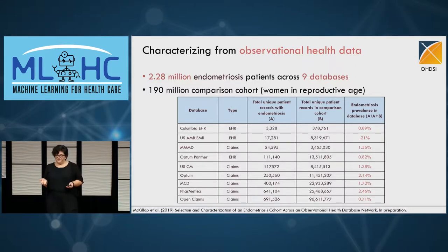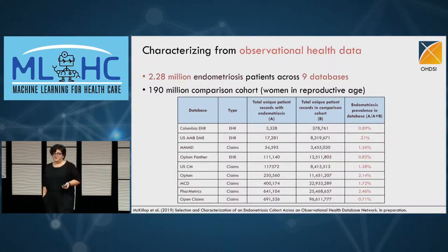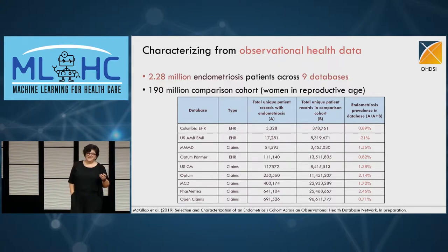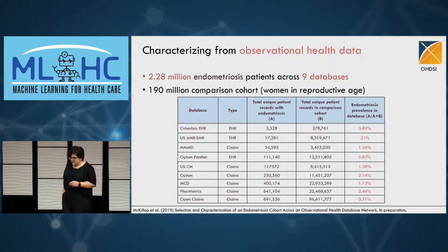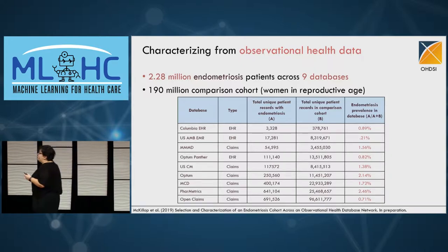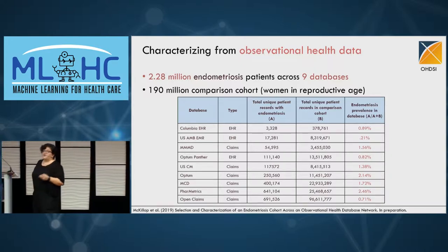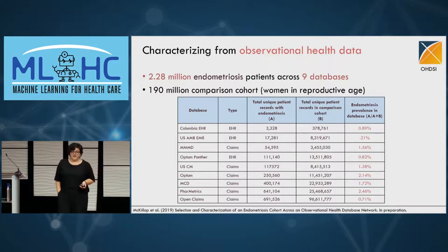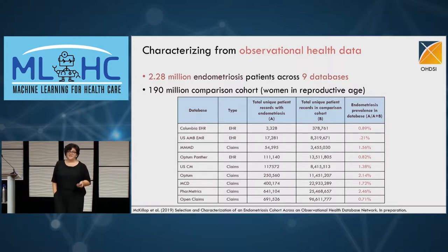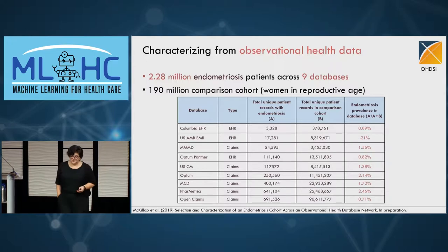Remember the epidemiologists told us there's an estimated 1 in 10 women in reproductive age affected — but this is not what we're finding. We have a very low prevalence of women who actually have the diagnosis. There are different ways to interpret this: the estimate is really an estimate, and because there's such a lag to diagnosis, there are probably many women who go on without being diagnosed. We really have no idea at this point.